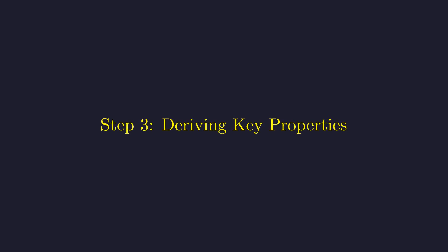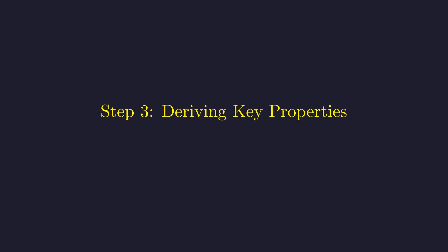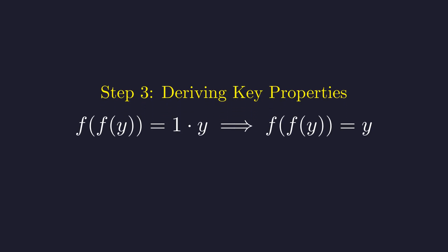With c equals 1, our earlier findings become much more specific and powerful. The relation f of f of y equals c times y now simplifies beautifully to f of f of y equals y. This means f is its own inverse, a special type of function mathematicians call an involution.